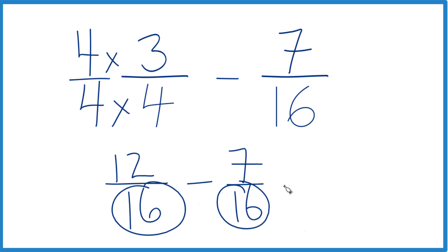And 12 minus 7, that equals 5. And then we just bring the sixteenths across, and we have 5 sixteenths. So 3 fourths minus 7 sixteenths, that does equal 5 sixteenths.